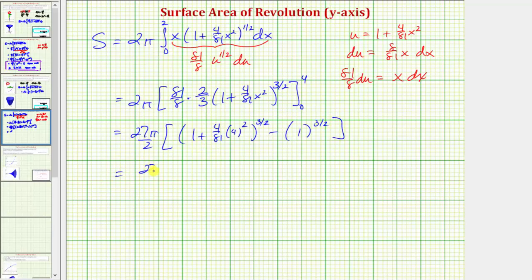Simplifying, we have 27 pi divided by 2 times, here we have 16 times 4 over 81, and then plus 1, which comes out to 145 over 81, which is raised to the 3 halves power. And then 1 to the 3 halves is just 1. So this would be the exact surface area, which we'll leave in this form, this would be square units.